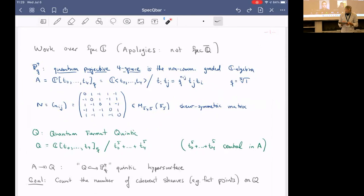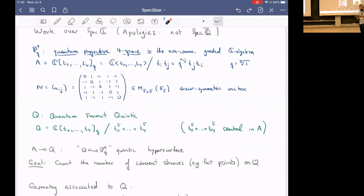So I start out with the quantum polynomial ring. There are five generators T0 through T4, and the Q means quantum. These coordinates don't actually commute with each other, but they commute up to some fifth roots of unity. I choose a fixed primitive fifth root of unity, and all the others are just powers of that fixed one. All these commuting relations I can summarize by giving you this matrix.